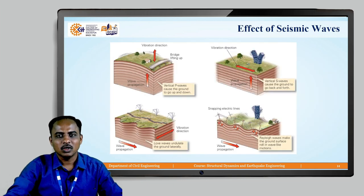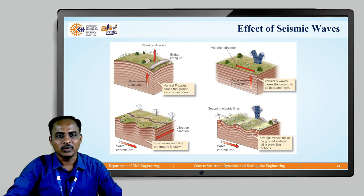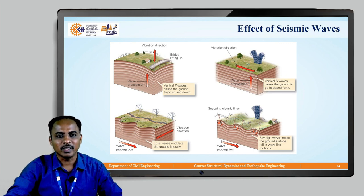What are the effects of seismic waves? There are vertical direction waves and horizontal direction waves. Vertical waves affect long span structures like bridges. Horizontal waves mostly affect vertical structures like tall buildings. L waves and R waves affect differently the structures present on the earth's surface.